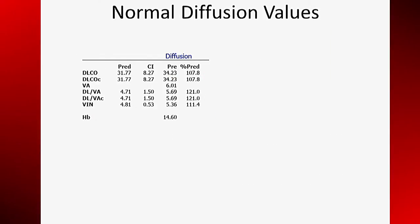Like the lung volumes, it is important to interpret diffusion within the context of spirometry. Once again, the lower limit of normal is 80% of predicted. The diffusion measurements have a greater standard deviation than the other measurements, so a slightly low diffusion — say 75% — with all other measurements normal would likely be a normal variant. The diffusion measurement can be falsely depressed due to active cigarette smoking. A low diffusion value with normal lung volumes and spirometry can be a sign of pulmonary vascular disease, and pulmonary hypertension should be considered in this situation.